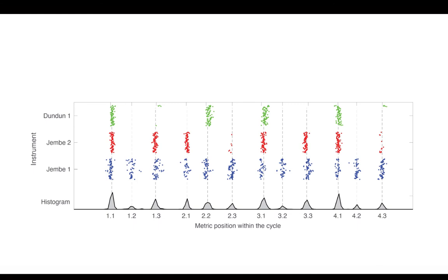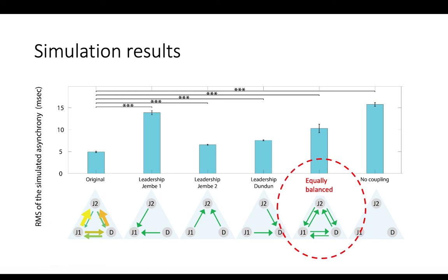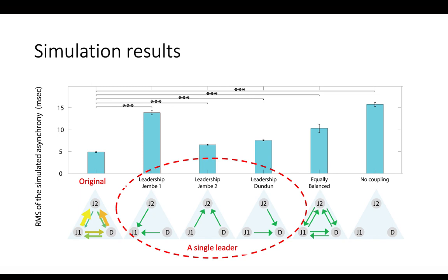Our analysis of the timing asynchronies in performances of Suku and our simulations of hypothetical coupling arrangements suggest that Malian musicians have developed a near-optimal strategy for their particular ensemble. In a djembe trio, the three musical roles differ in information density and in variability. As a result, an asymmetrically distributed model for ensemble coupling performs substantially better than either a balanced democratic arrangement or a hierarchical model yoked to the musically dominant lead drum.